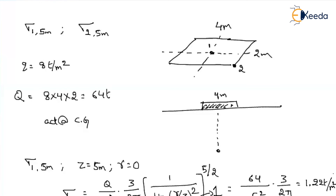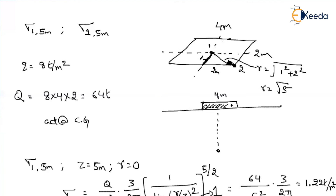For the corner (point 2), the depth is the same — 5m — but the load and the point are at different locations, so we need to find the radial distance R. R is the horizontal distance in plan from the load acting point (CG) to the corner. Looking at the top view: if the total dimensions are 2m by 4m, the half-dimensions are 1m and 2m. So R = √(1² + 2²) = √5 meters.